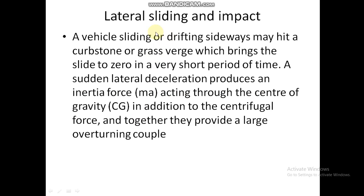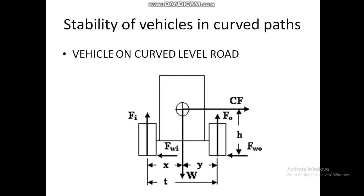In this part we will discuss lateral sliding and impact. A vehicle sliding or drifting sideways may hit a curbstone or grass verge which brings the slide to zero in a very short period of time. When the vehicle is sliding towards the right side, there may be a grass verge or curbstone — an obstruction — which the vehicle may hit while sliding.